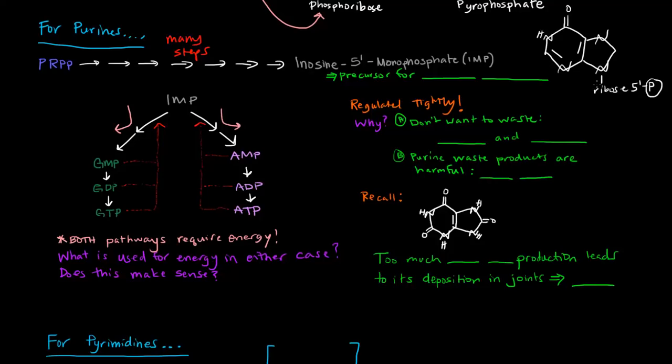So why is IMP important? IMP is important because it's a precursor specifically for the purine nucleotides, which you should know as guanosine and adenosine. Now IMP can be used to create the GMP or the AMP, and each of those, this GMP can go on to make GDP and GTP, and the AMP can go on to make ADP and ATP.